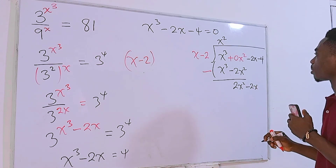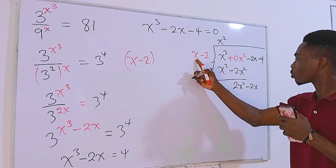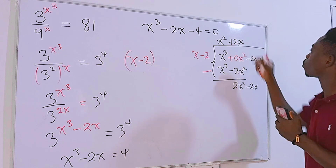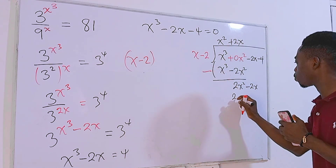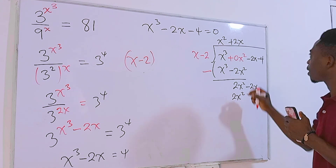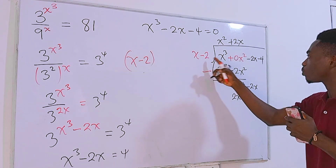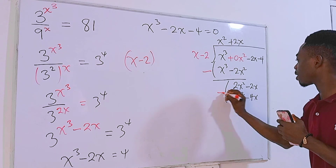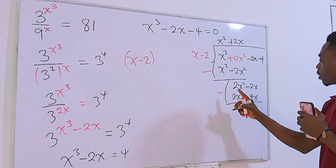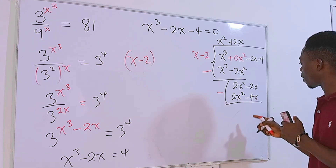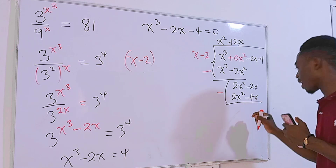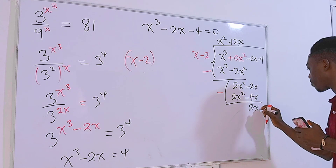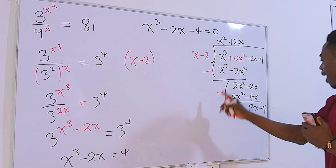What times x gives 2x squared? That's positive 2x. Then 2x times x is 2x squared, and 2x times negative 2 is minus 4x. Subtracting: 2x squared minus 2x squared is zero, and minus 2x minus (minus 4x) gives 2x. Bringing down minus 4.